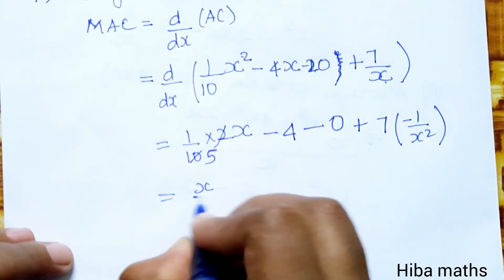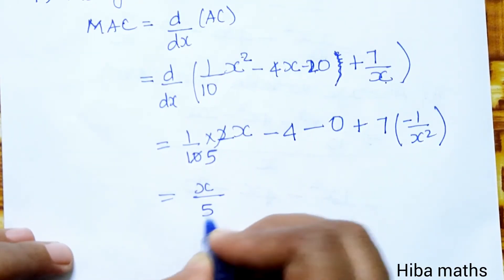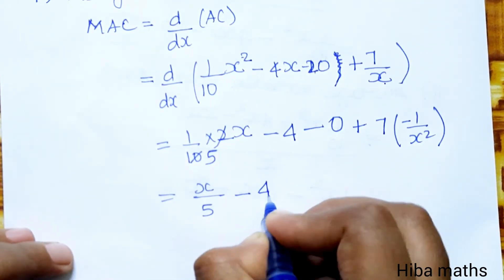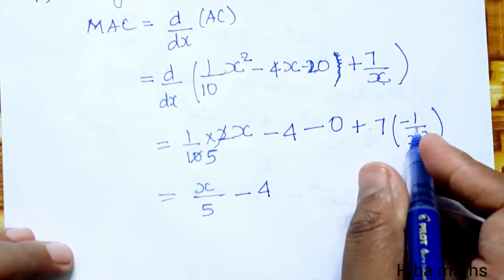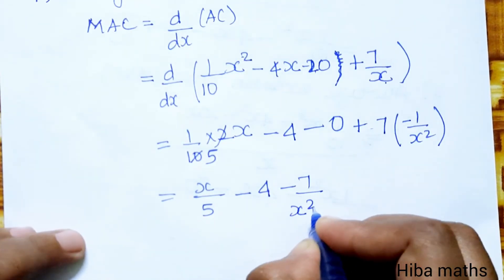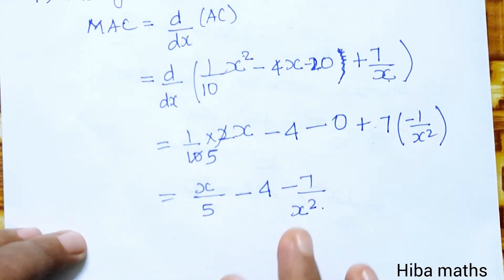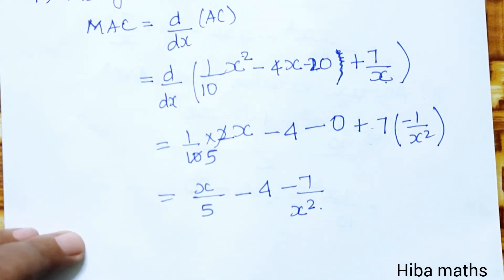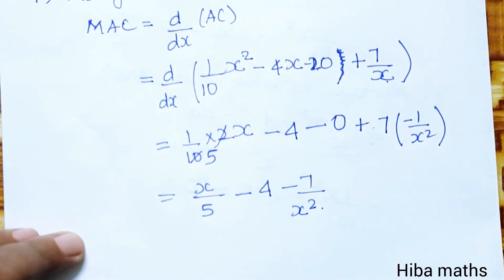Simplifying: x/5 minus 4 minus 7/x². This is our MAC answer. You will understand the sum. Thank you so much for watching.